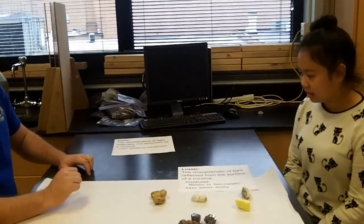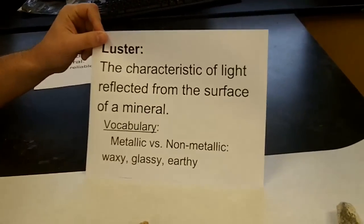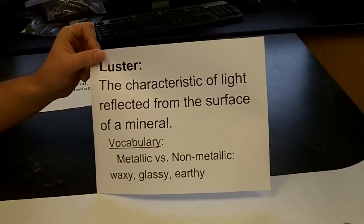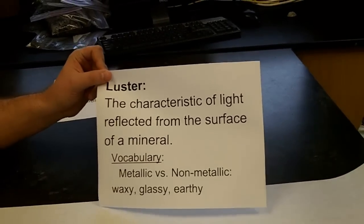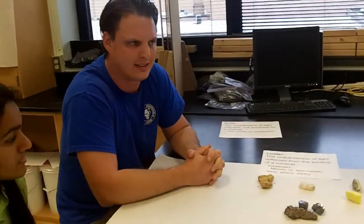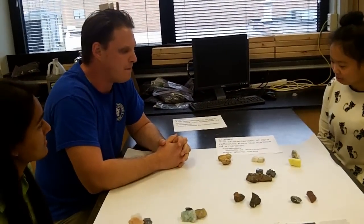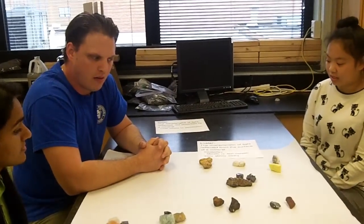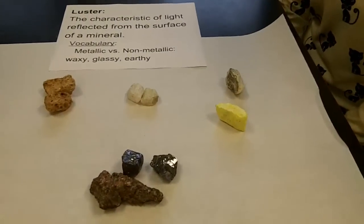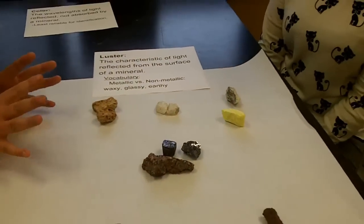This next one is luster. The definition: the characteristic of light reflected from the surface of a mineral. So besides color, if we take a look at some of these minerals, how else do they look different? The texture — you can see they don't all look the same texture.